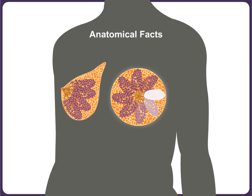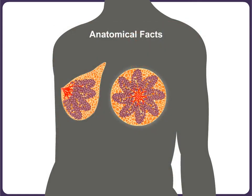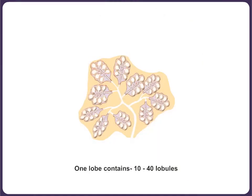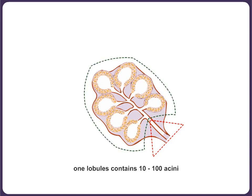There are seven to eight lobes in each breast. These are arranged like a bunch of grapes, each grape representing the milk gland or acinus, and the stalk represents the major milk duct opening at the nipple. Each lobe contains 10 to 40 lobules, which in turn are composed of 10 to 100 acini. These acini are the basic secretory unit of the breast.